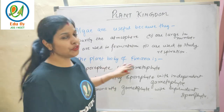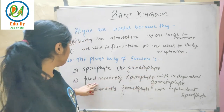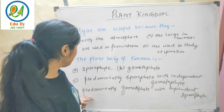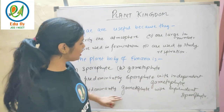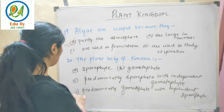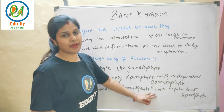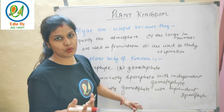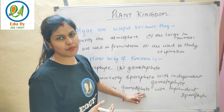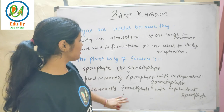The plant body of Funaria is predominant gametophyte with dependent sporophyte. The sporophyte partially depends on the gametophyte for nutrition. So the option is option B — predominant gametophyte with dependent sporophyte.